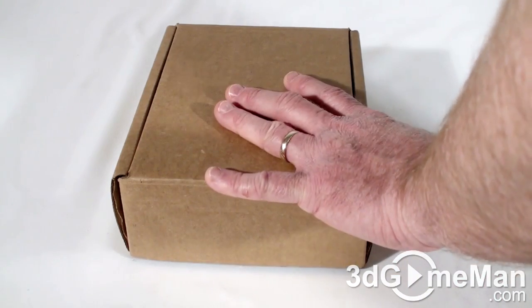Welcome to another unboxing video. Today I'm looking at the Western Digital Scorpio Blue 750GB 2.5-inch hard drive. This is your typical box for Western Digital.